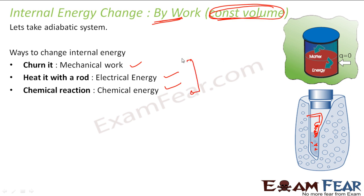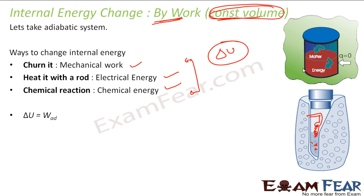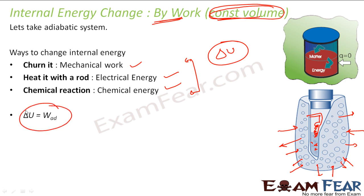You can do it by three ways — maybe you can think of more. You can either churn it using mechanical energy, you can heat it by passing electrical energy, or you can do some chemical reaction — that means chemical energy. In all these cases the internal energy of the system will change. And since this is an adiabatic system, there is no heat transfer from outside to system or system to surroundings. So my change in internal energy will be nothing but the work done — adiabatic work — whether you did it by churning, heating, or chemical reaction. All this adiabatic work is nothing but the change in internal energy.